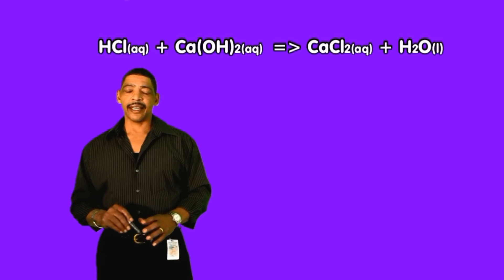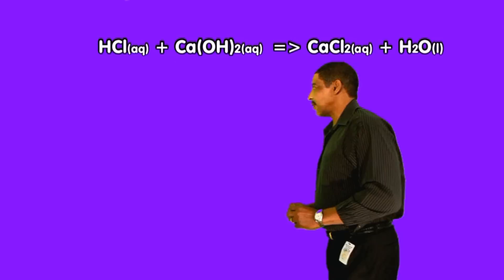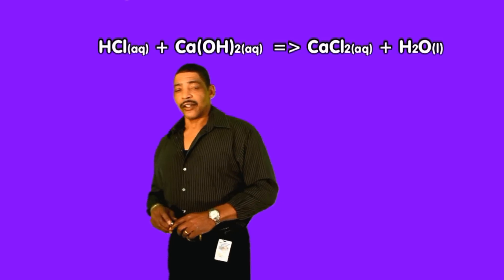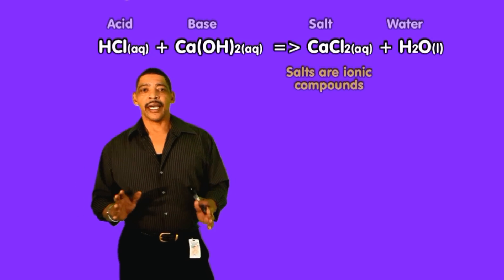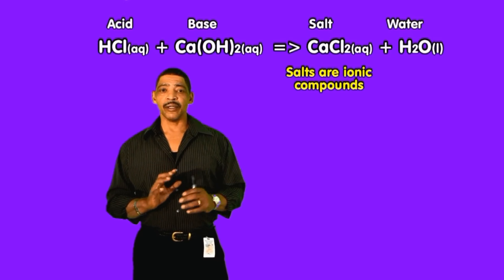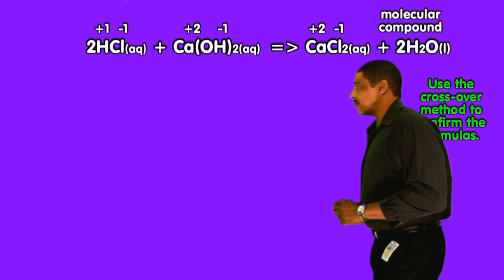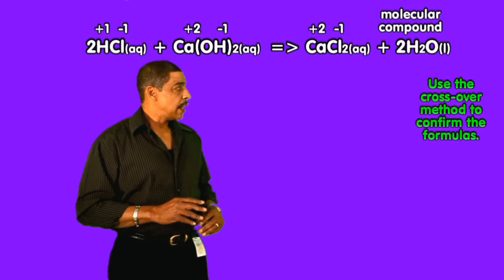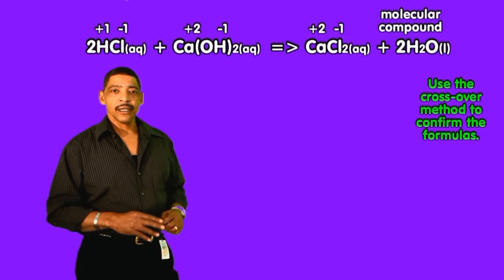When an Arrhenius acid reacts with an Arrhenius base, a salt and water will be produced — this is also a double replacement reaction. Consider the following where hydrochloric acid reacts with calcium hydroxide to produce the salt calcium chloride and molecular water. During the reaction between an Arrhenius acid and an Arrhenius base a salt and water will always be produced. Let's balance the equation where we place a coefficient of 2 in front of the HCl, a 1 in front of calcium hydroxide, a 1 in front of calcium chloride, and a 2 in front of the liquid water.